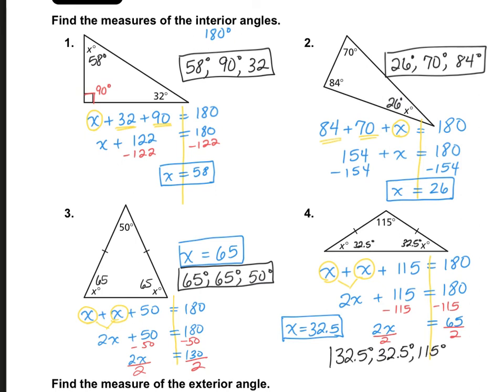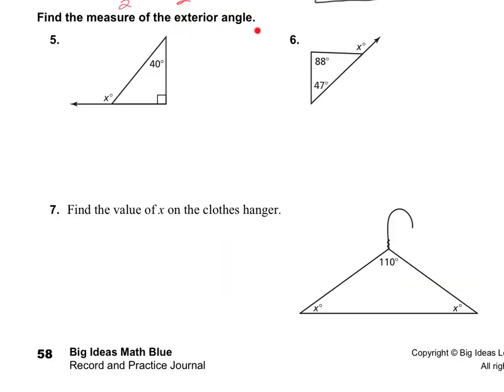I believe on Big Ideas Math, when you do these problems, you will have to put the angles in order from smallest to largest, but I'm not 100% sure — so make sure you read the directions well when you do the concept practice. Moving on: find the measure of the exterior angle. Remember, the exterior angle is equal to the sum of the two interior non-adjacent angles. For number 5, this is 90, so 90 plus 40 will give us x. So the exterior angle is 130 degrees.